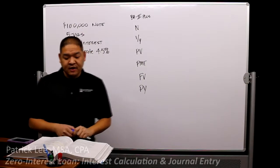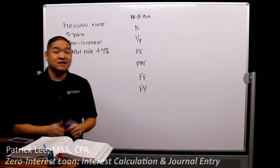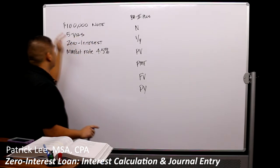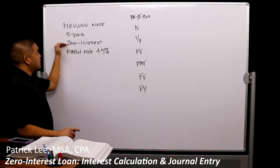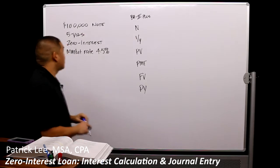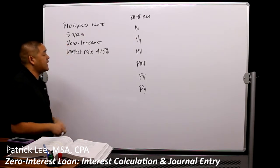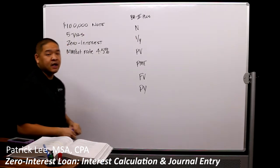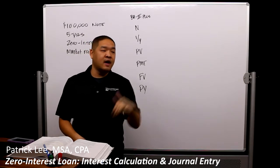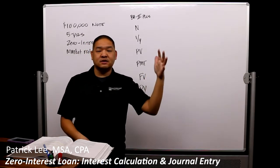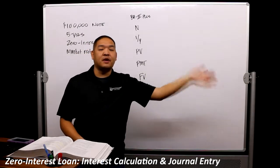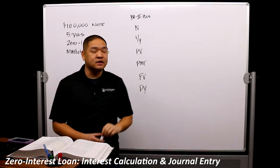In this video we're going to talk about the acquisition of PP&E using a zero-interest note. What's happening is that we're going to a company, buying a piece of equipment, and they say they won't charge any interest — just pay X amount of dollars every month for X amount of time, and then the item is yours.